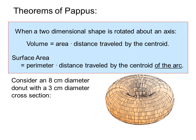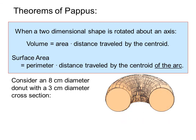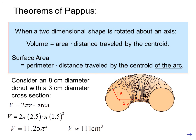Consider an 8 centimeter diameter donut with a 3 centimeter diameter cross section. There's our high-tech donut. So our dimensions would look like this. The volume, then, is 2πr times the area of the shape. That is, the distance traveled by the centroid times the area. Or in this case, 2π times 2.5 times π times 1.5 squared. The volume of the donut then becomes 11.25π² or approximately 111 cubic centimeters.